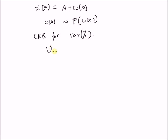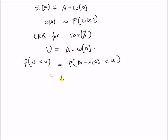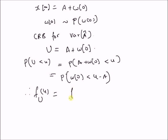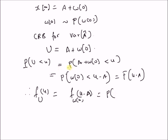Let a new random variable U equal A plus W(0). Then the probability of U less than small u is equal to the probability of A plus W(0) less than small u, which equals the probability of W(0) less than u minus A. Therefore, the probability density of U is equal to the PDF of W(0) evaluated at U minus A, so this equals P of U minus A, where P is the PDF of W(0).